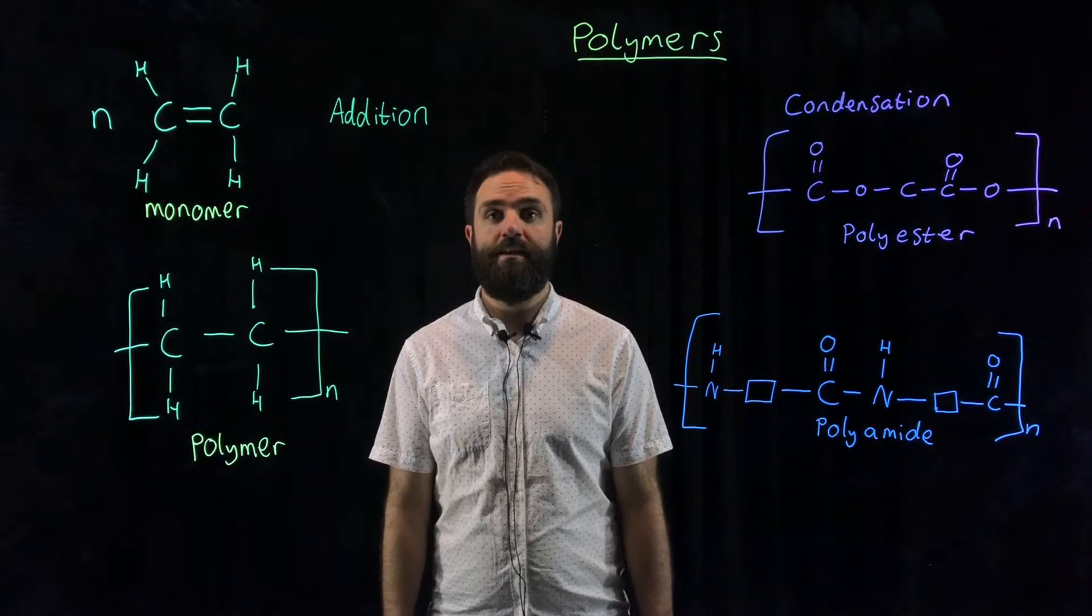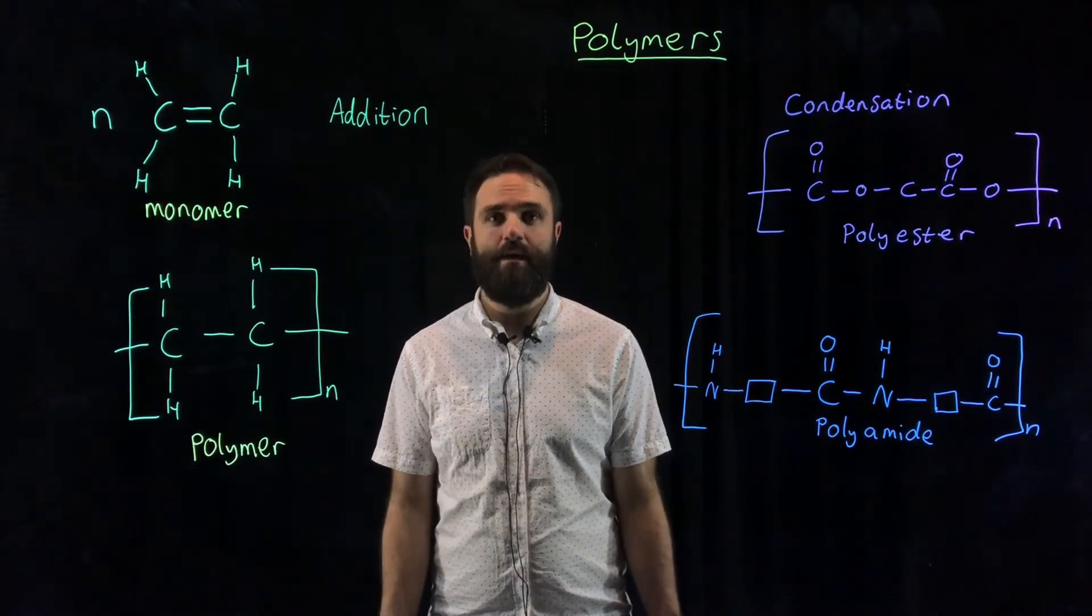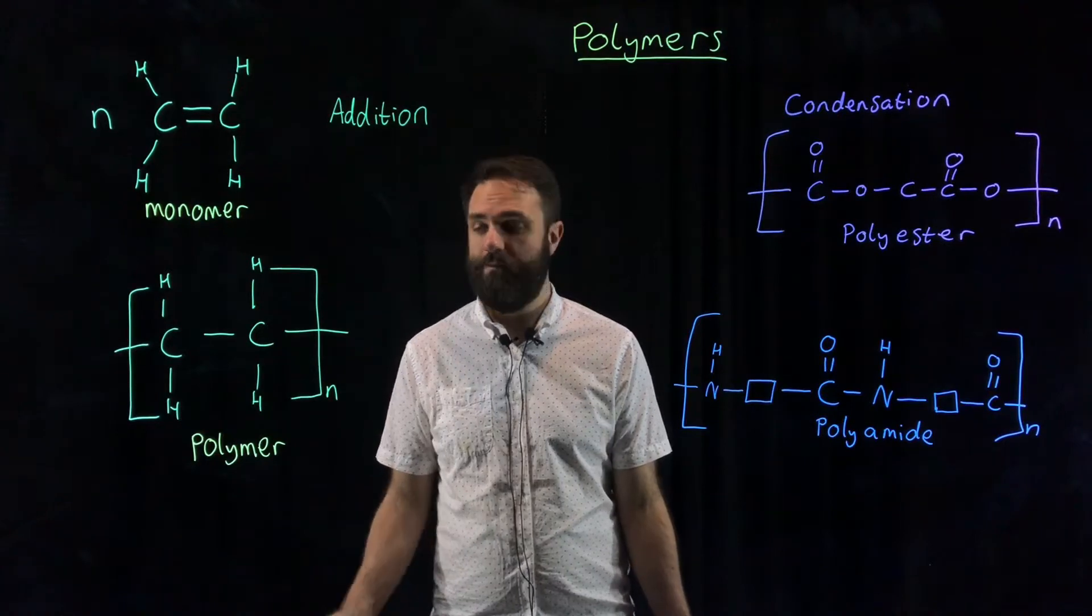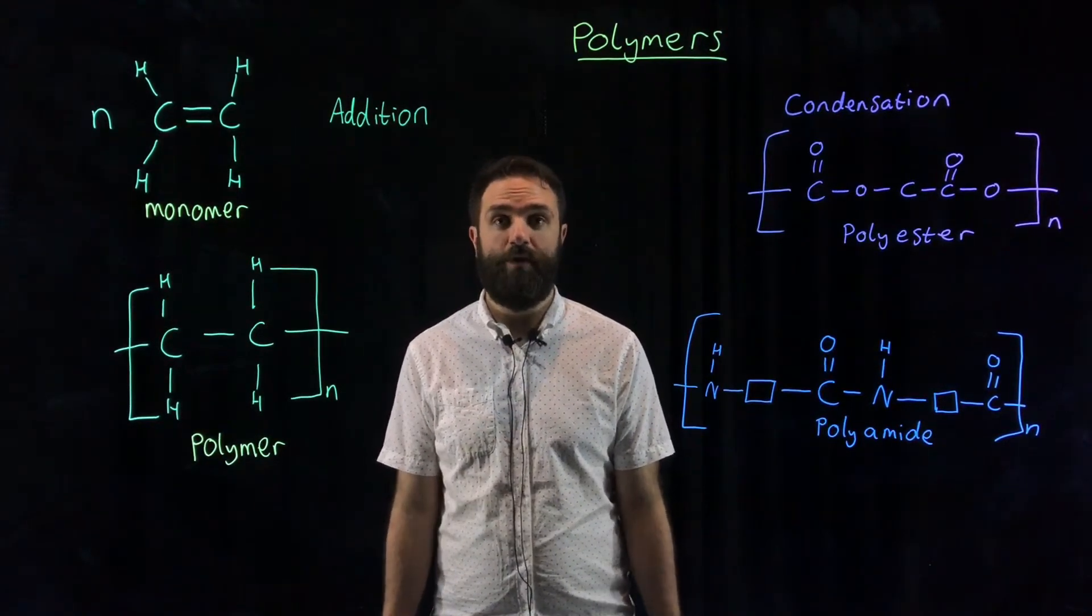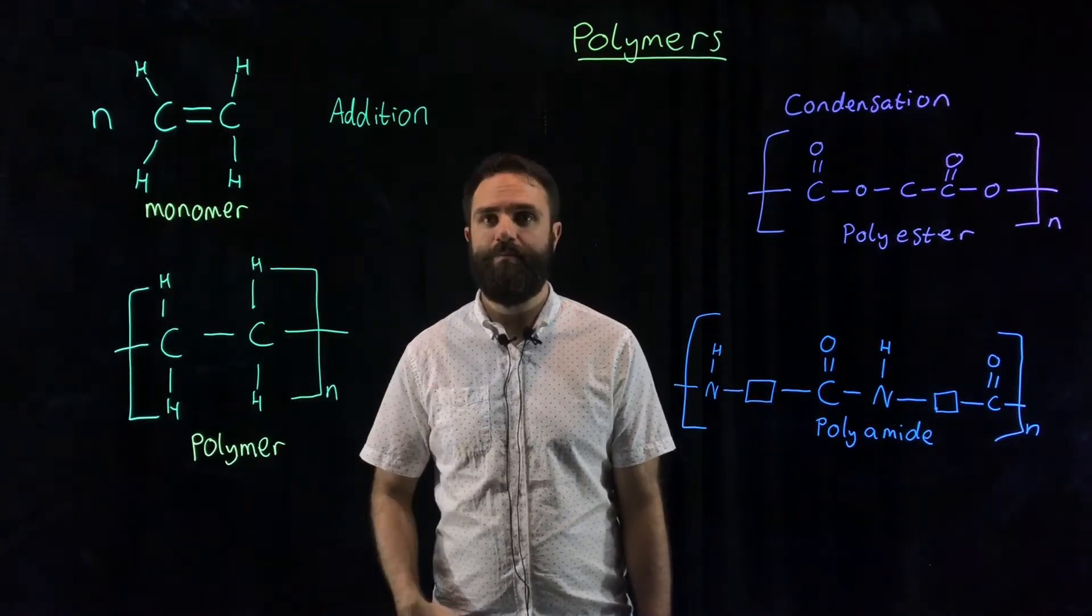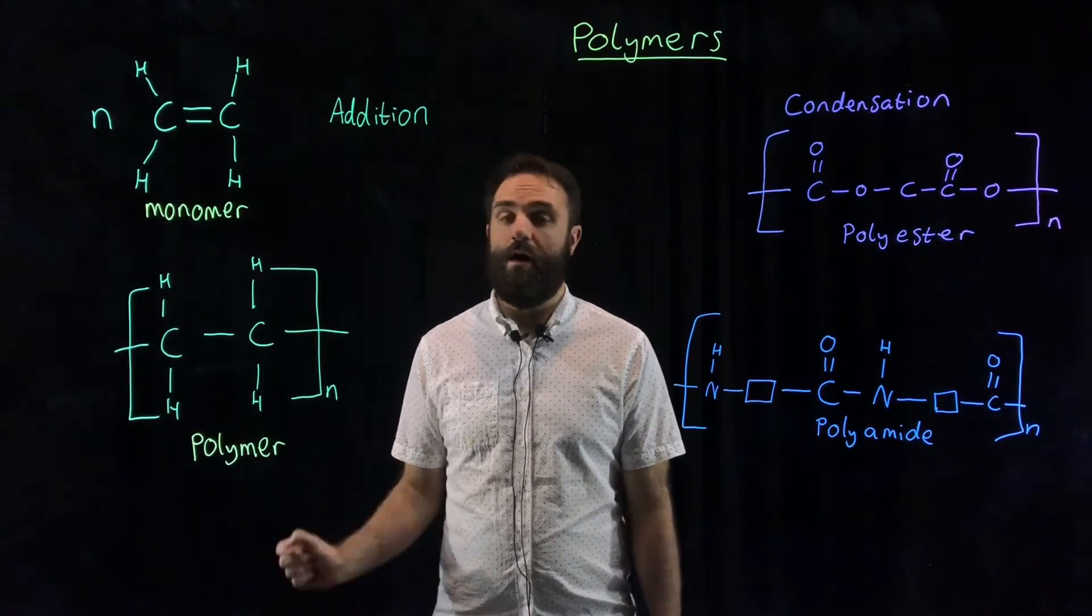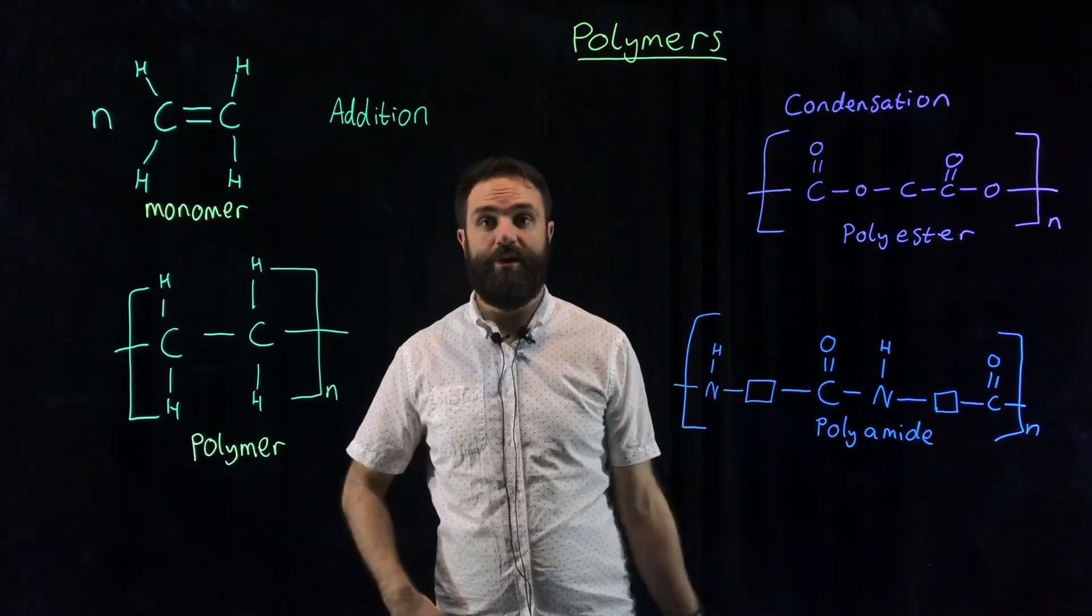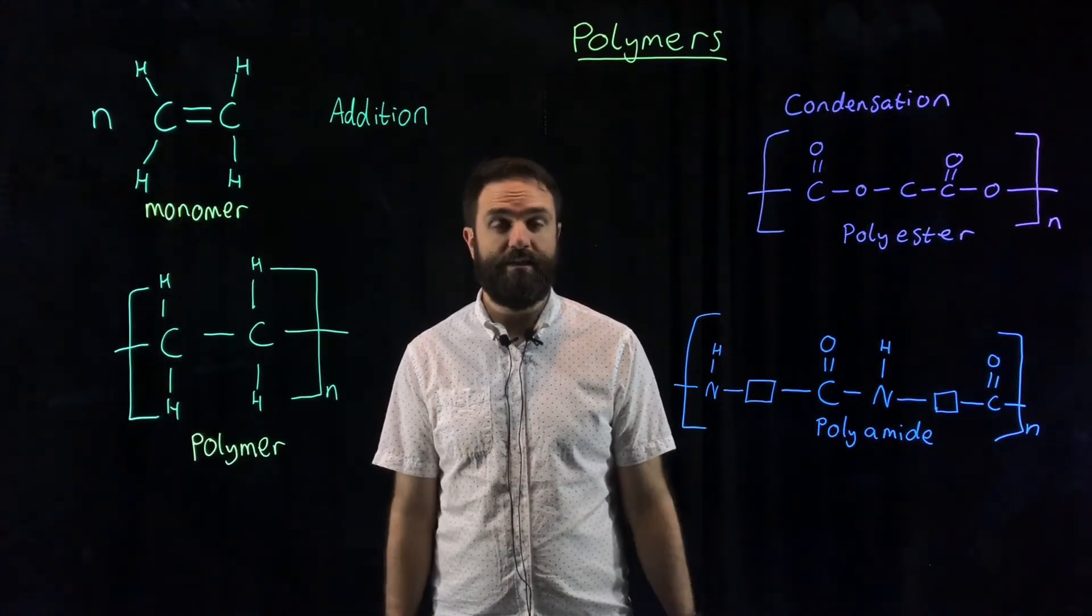There are two main types of polymer. Now a polymer is a long repeating unit. It's a very long molecule made up of lots of smaller molecules. Those smaller molecules that the polymer is made from are called monomers. There's two ways of making a polymer, joining those monomers together. They are addition and condensation, and we call the resulting polymers addition polymers and condensation polymers.